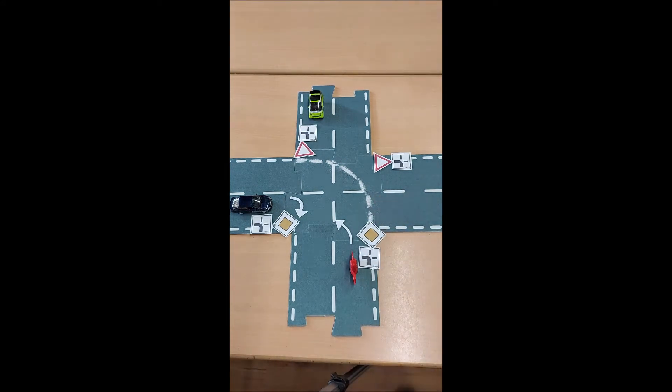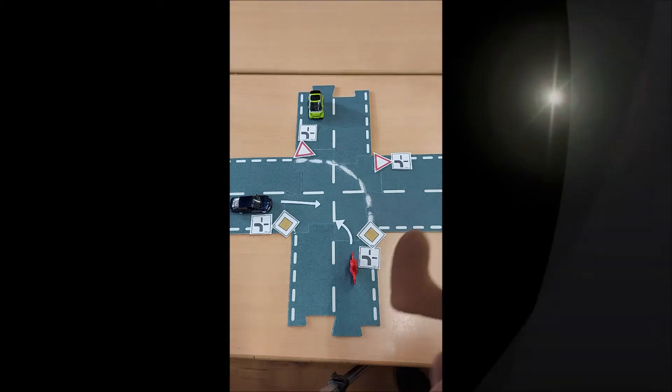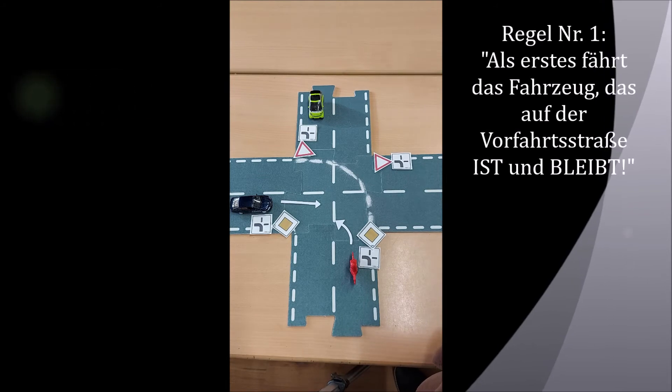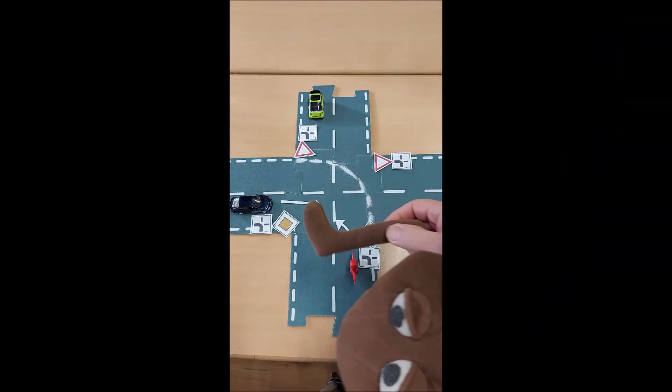Jetzt ändern wir aber die Situation einmal. Wir lassen das schwarze Auto einmal geradeaus fahren. Wie ist denn jetzt die Situation? Jetzt hat sie sich ein bisschen geändert. Wer auf der Vorfahrtsstraße ist und bleibt, darf als erstes fahren. Der Fahrradfahrer fährt als erstes.